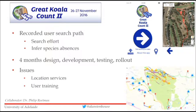Some interesting issues we had involved location services. Despite the app reminding users and people being instructed to have location services turned on, and even being reminded at the end of the first day — this ran over a weekend — some people still had their location services turned off without realising it, so their data was unusable. And a lack of user training: some people turned the app on, it started recording their location, then they got in the car and drove to the national park where they'd start searching. These are the types of issues you encounter and don't anticipate.